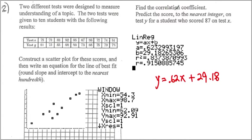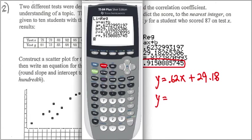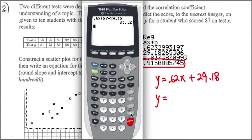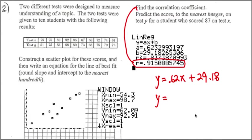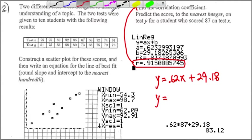Now, find the correlation coefficient. Correlation coefficient will be this value. And predict to the nearest integer on test Y for the students who scored 87 on the X. So all we have to do is here, 0.62 times 87 plus 29.18. Then, the value that we end up getting is this one. And they want us to put it to the nearest integer. So it will be 83. That's basically what we end up getting.